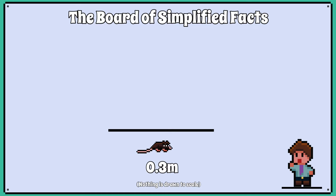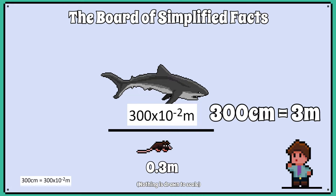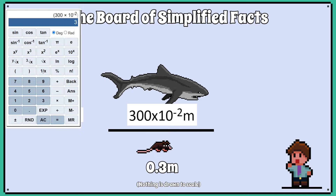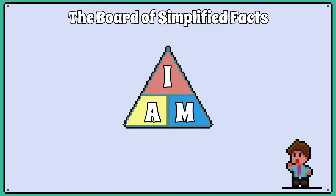So the rat stays at 0.3 metres, but the shark is really 300 times 10 to the negative 2 metres. I know most of you can just convert 300 centimetres into metres with ease, but it is a good habit because you won't find it easy converting megametres into metres, etc. Remember, the centi before metre means to the power of negative 2, so we get 300 times 10 to the negative 2 divided by 0.3 metres, which is 10. So the shark is only 10 times longer than the rat.